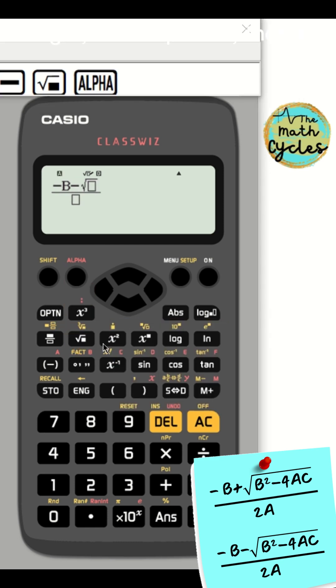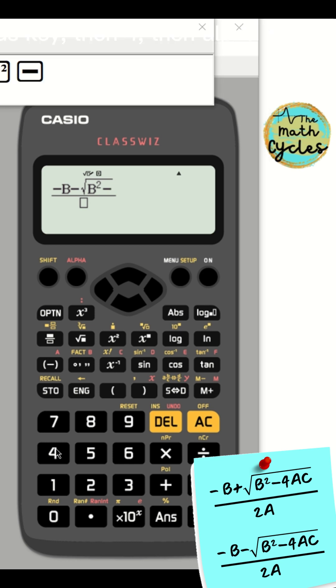Minus radical sign, then alpha B, then squared key. Then minus key, then 4, then alpha A, and alpha C.